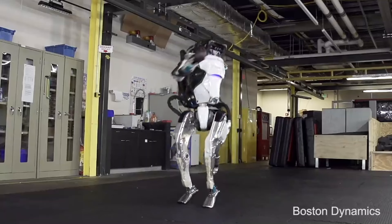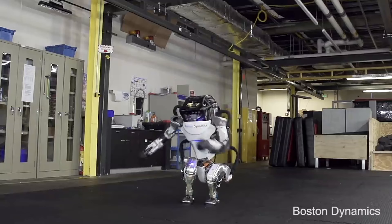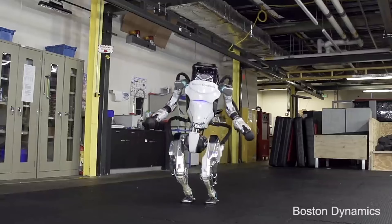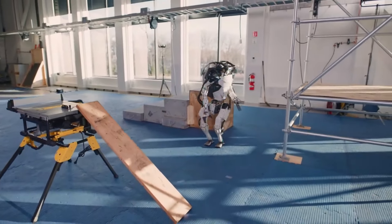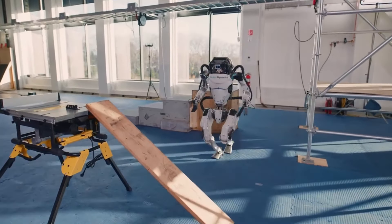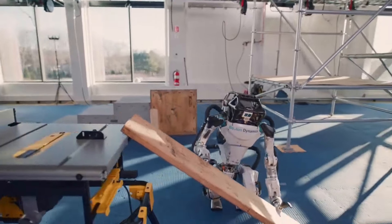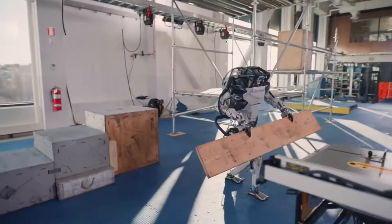Number 2. Atlas. A humanoid robot that redefines agility. Crafted as the epitome of robotic movement, Atlas showcases unparalleled whole-body skills, allowing it to move with unprecedented speed and balance dynamically, like never before.